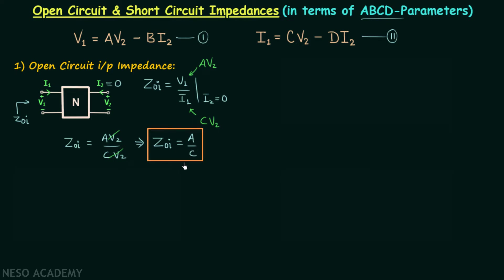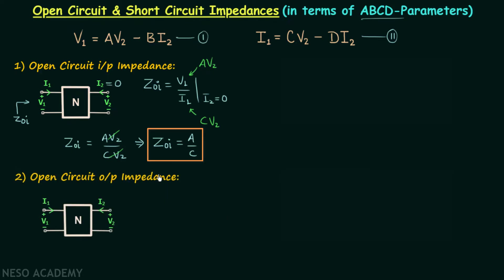Remember this result. Now moving on to the next impedance, we will find out the open circuit output impedance. This time we will open circuit the input port, and therefore current I1 will be equal to 0. We are finding the output impedance — the impedance when looked from these two terminals — and I will represent this impedance by Z sub OO. We know that Z sub OO will be equal to voltage V2 divided by current I2.